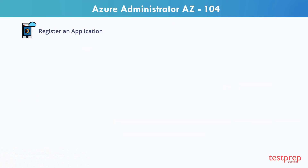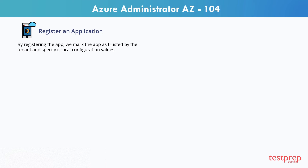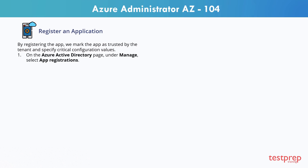Next, create a new registration in the Azure AD tenant for the web application. By registering the application, we mark the app as trusted by the tenant and specify critical configuration values.